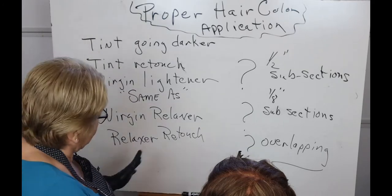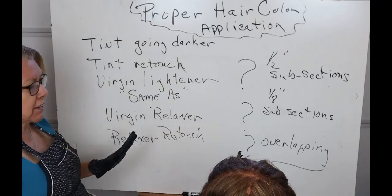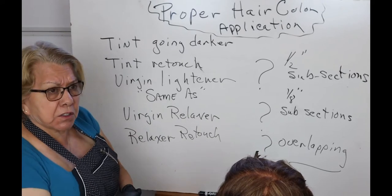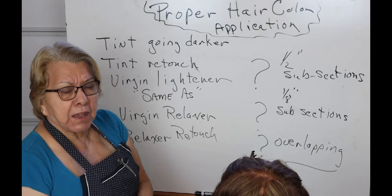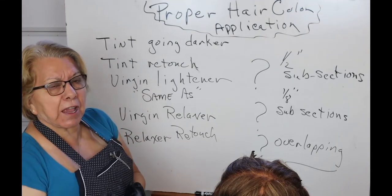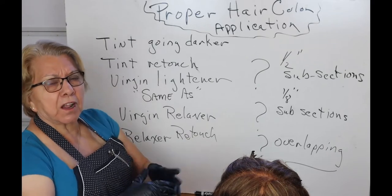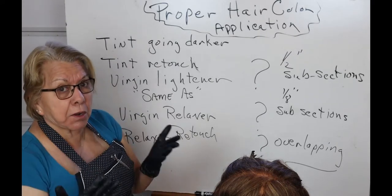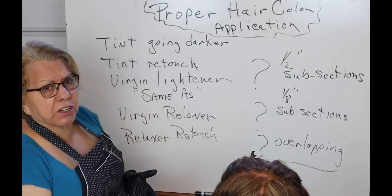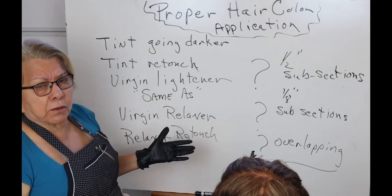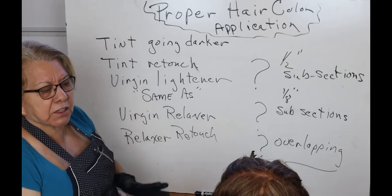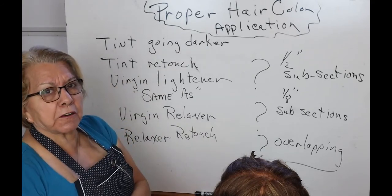What's fascinating is that a virgin relaxer is applied exactly the same as a virgin lightener — the application is identical. On a relaxer, we have to do certain things because relaxed hair is very curly, and curl tightness varies. But the application is the same: separate it, organize it, then put the chemical on. It's a chemical that changes either the structure or the color.